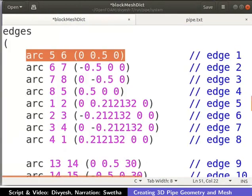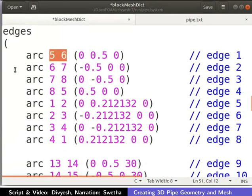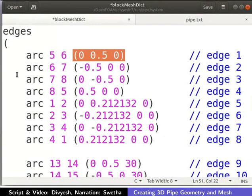The curved edge connecting points 5 and 6 is defined as shown. The edge is an arc. Its two end points are 5 and 6. The coordinates of the point through which the arc passes through is (0 0.5 0).